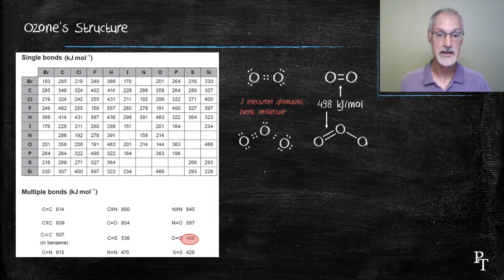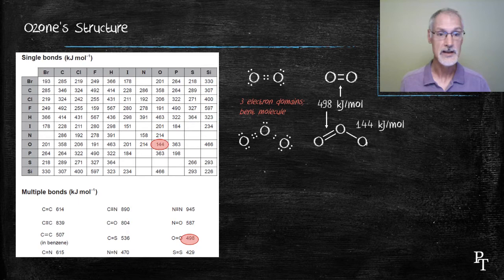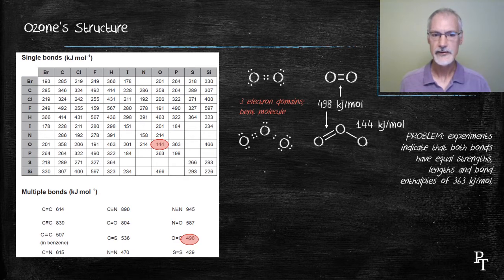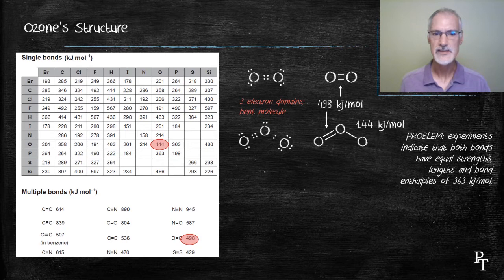From this picture, I can see or identify a double and a single bond. So it contains a bond of 498 kJ and a single bond of 144 kJ, based on this structure. The problem, though, is that experimental evidence suggests the bonds are of identical length. That contradicts our model. Our model here would predict a shorter double bond and a longer single bond. It also indicates the bonds are of equal strength, 363 kJ, which lie somewhere in between these two values.